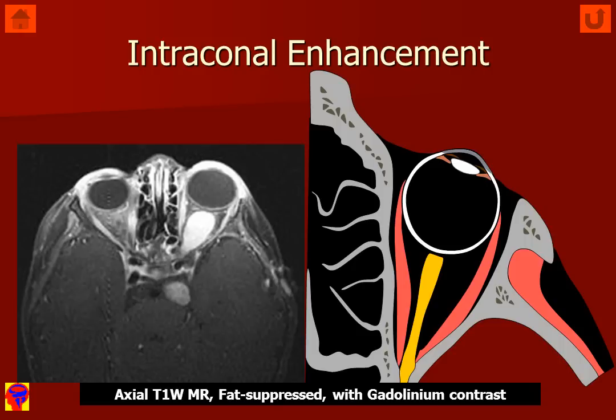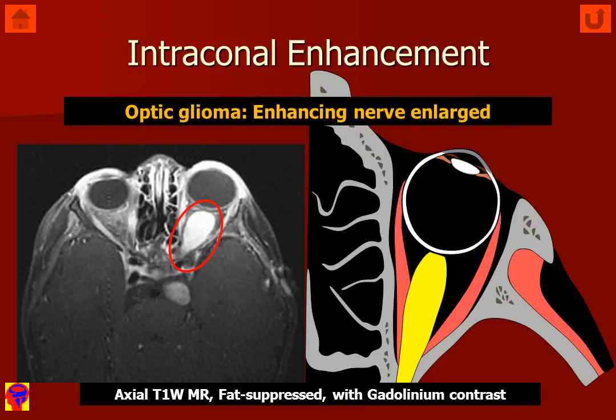If we have intraconal enhancement in a mass lesion, the differential diagnosis changes. We can see here that there is an enhancing mass in the center of the muscle cone. If we look at the diagram, we see an enlarged optic nerve. This is most consistent with an optic nerve glioma, typically an astrocytoma. We must look very carefully for intracranial extension of this neoplasm, and in this case we can see that there is involvement of the optic nerve adjacent to the optic chiasm. So here we have a patient who has an optic nerve glioma.